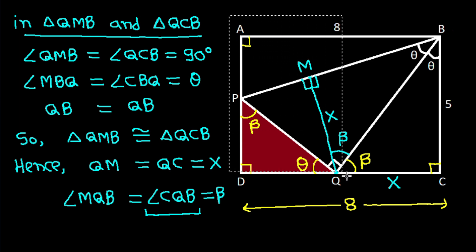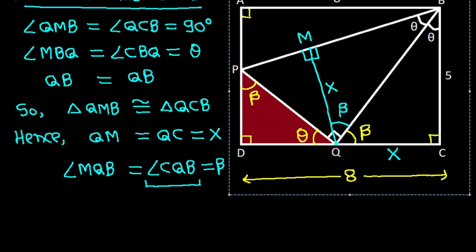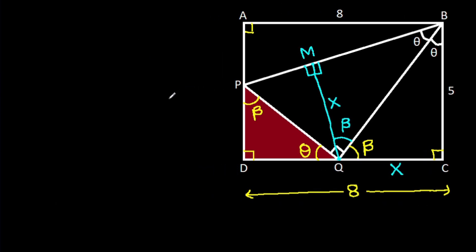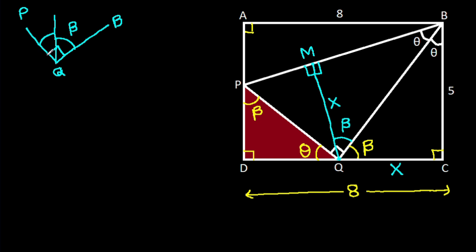Now, angle PQB is 90 degrees and this angle is beta, so this angle will be 90 degrees minus beta, which is theta. This angle will be beta, and this angle will be 90 degrees minus theta, which is beta.